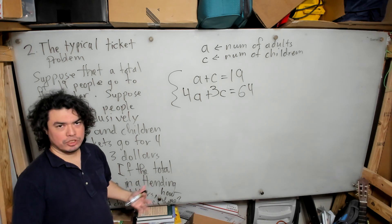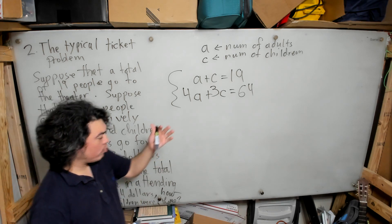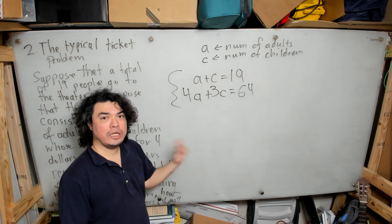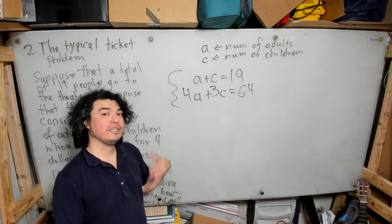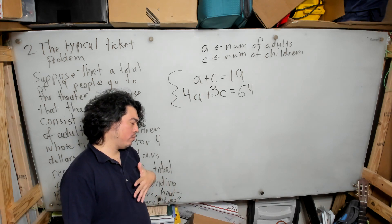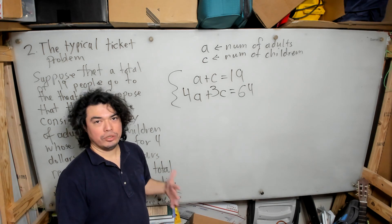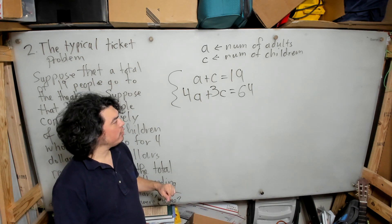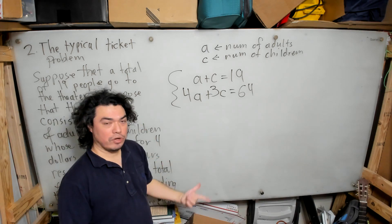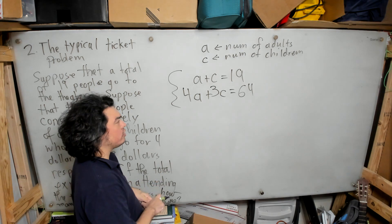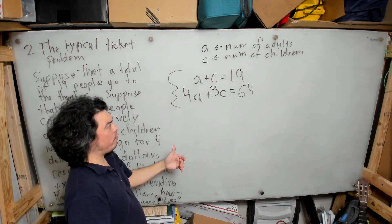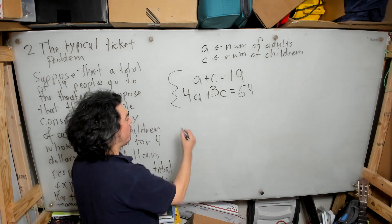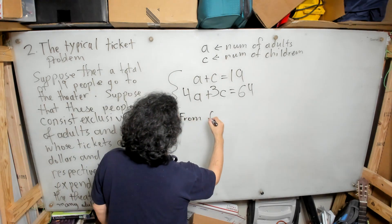We're going to solve this system using substitution first, and then we'll redo it with Gaussian elimination so you can see both techniques. My opinion is that as long as you know one technique it's good, but I want you to be familiar with both. For the substitution technique, we choose an equation that seems amenable to solving for one variable — in this case, the first equation.